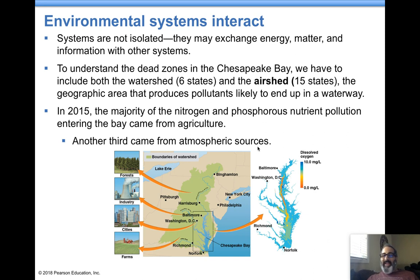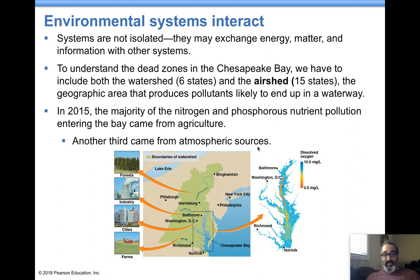An airshed is not only a watershed that can impact an area — it's the air. It's the geographic area that picks up air pollutants. Air pollutants condense and precipitate, so they end up being a problem too. Different systems interact with each other — water systems can be impacted by atmospheric conditions, showing us the connections between the two.